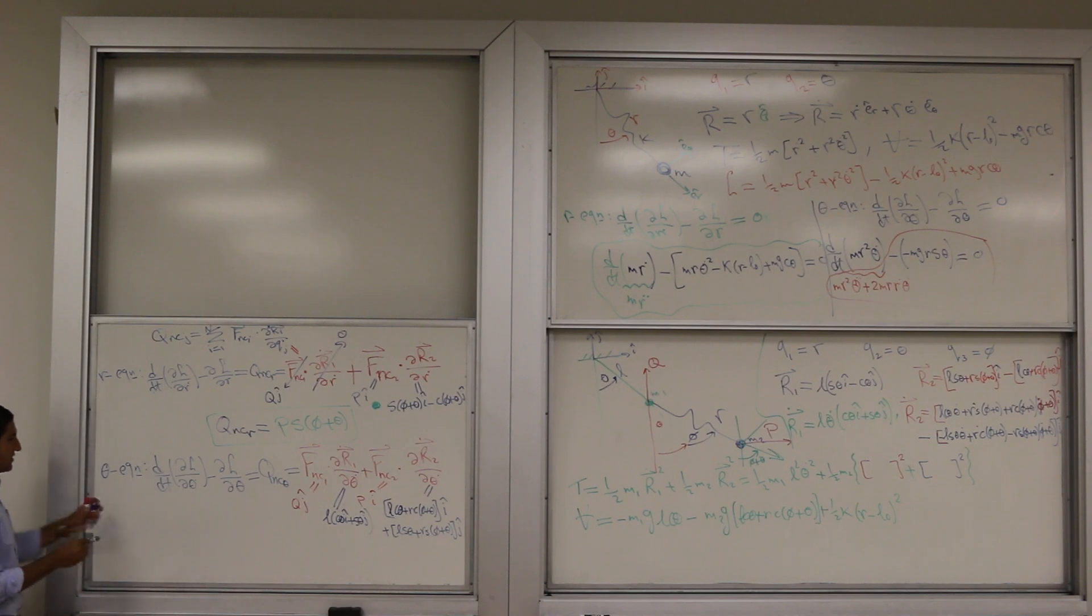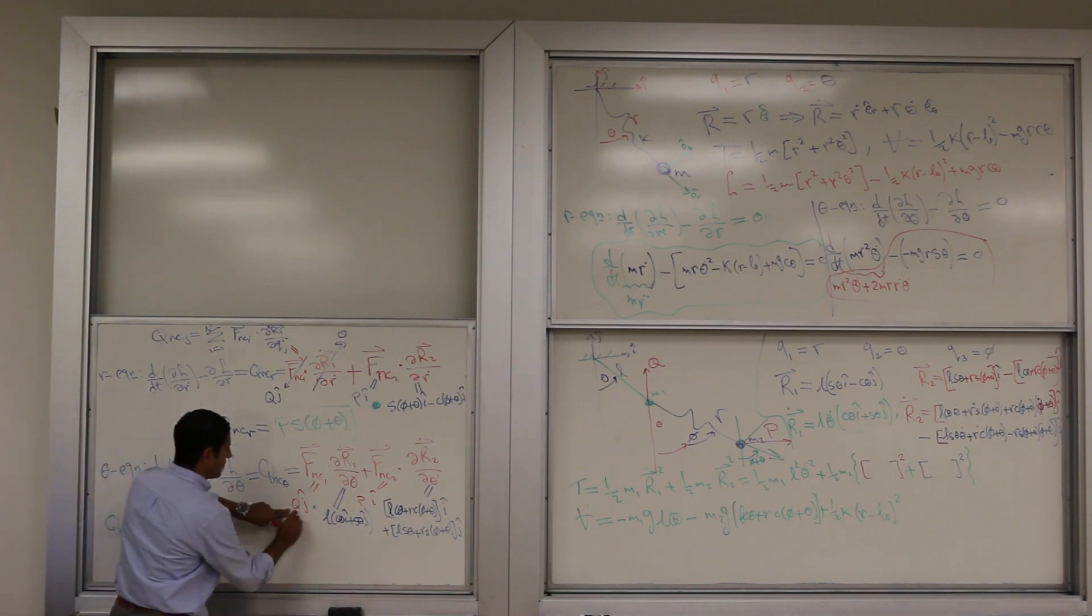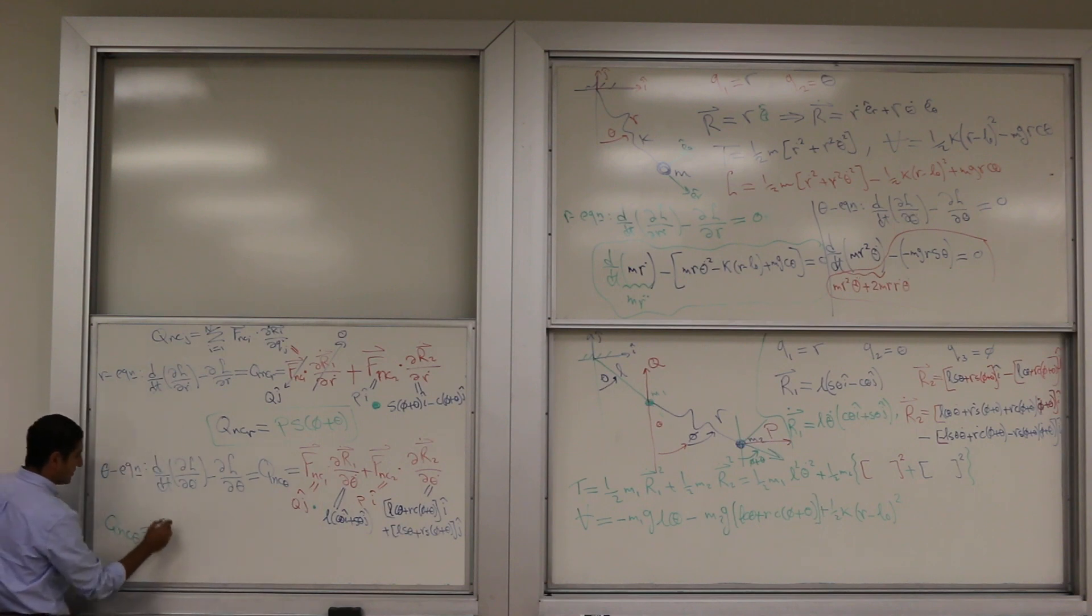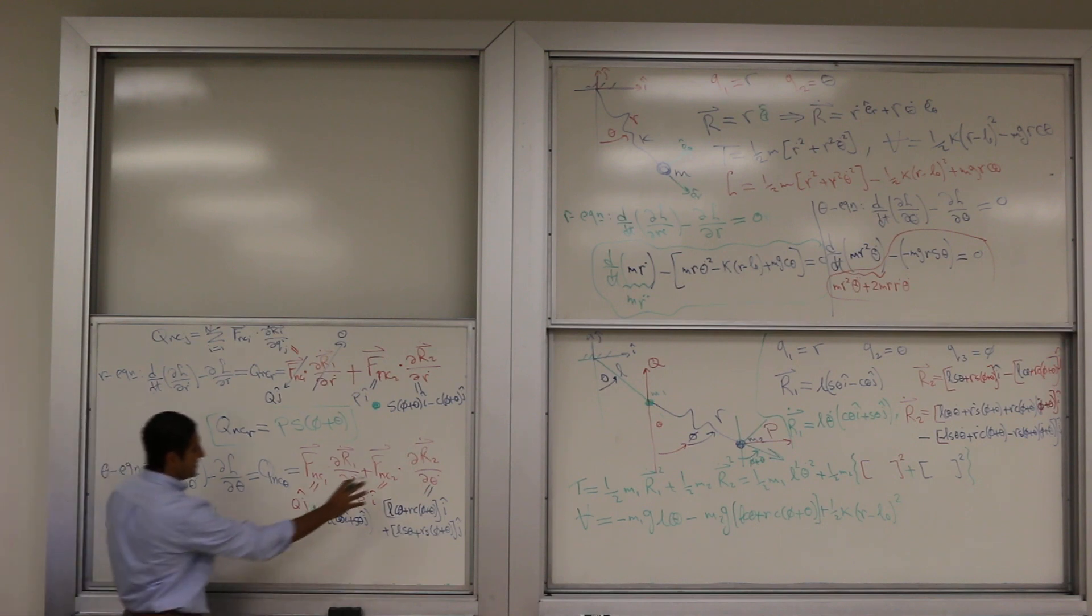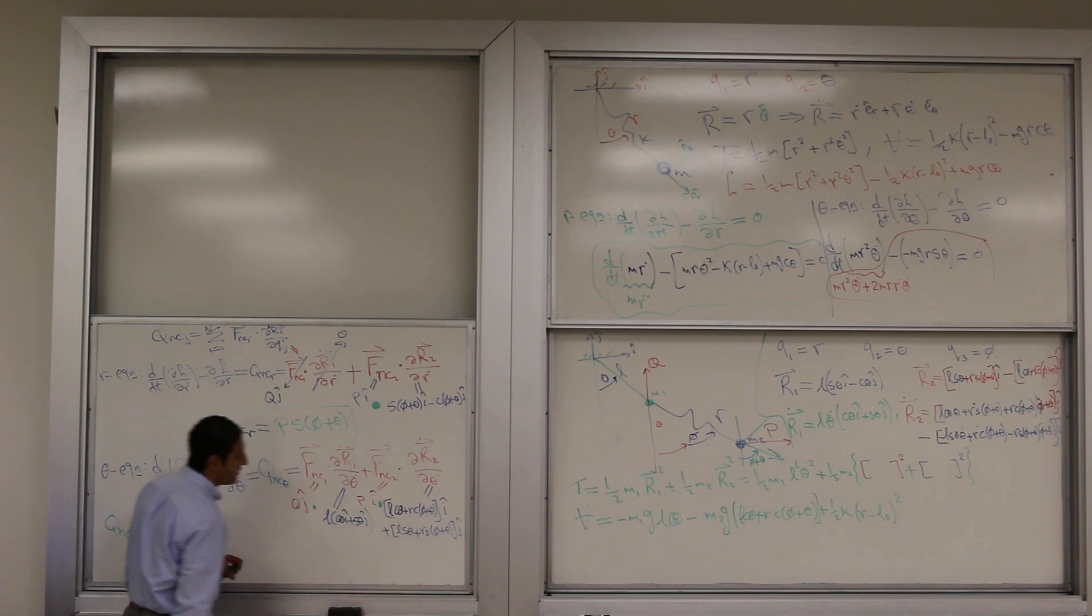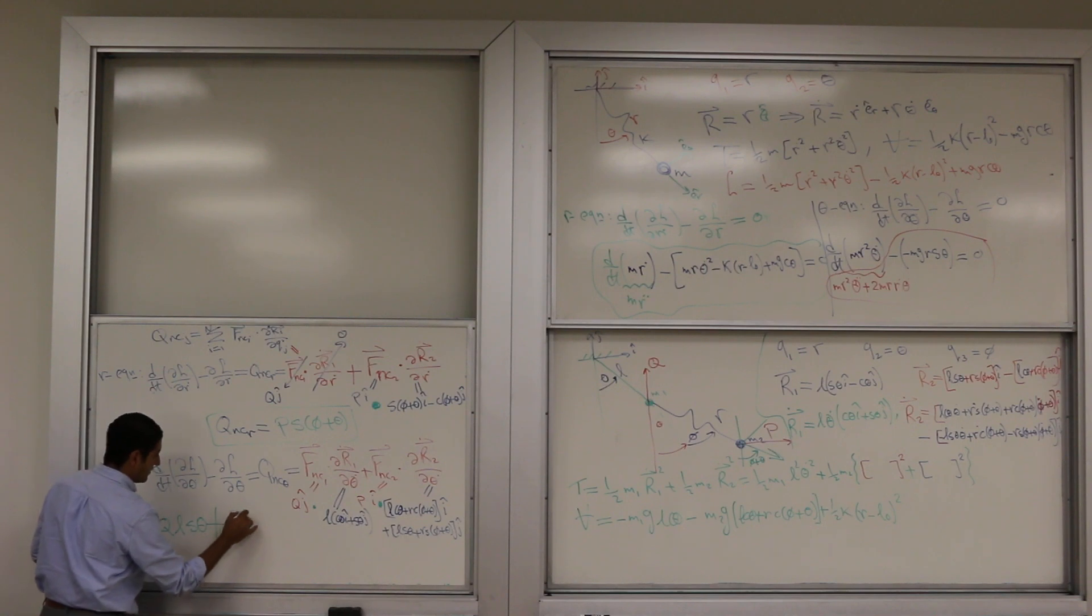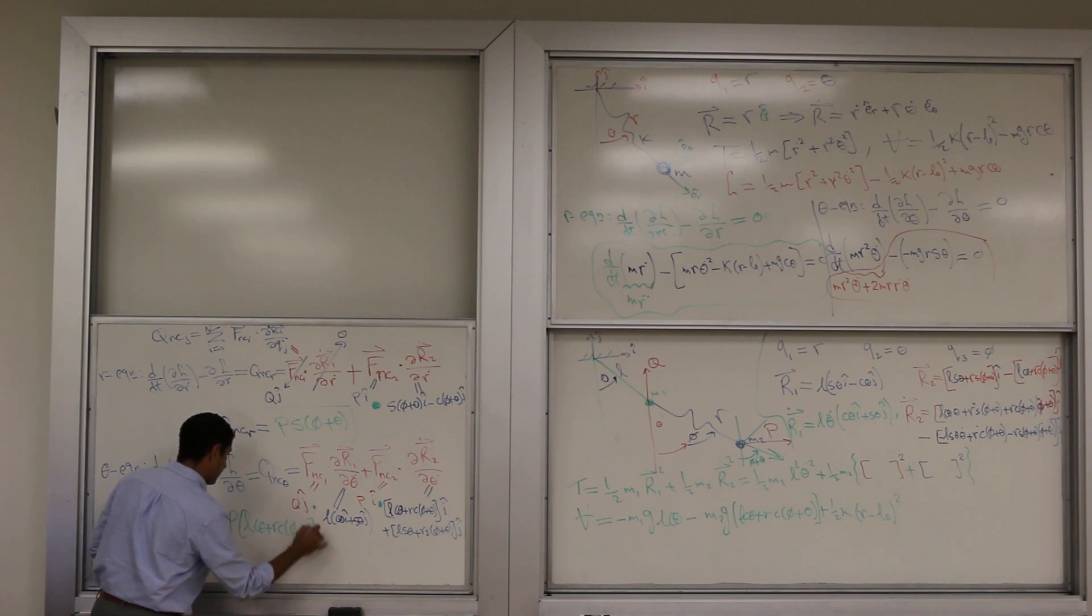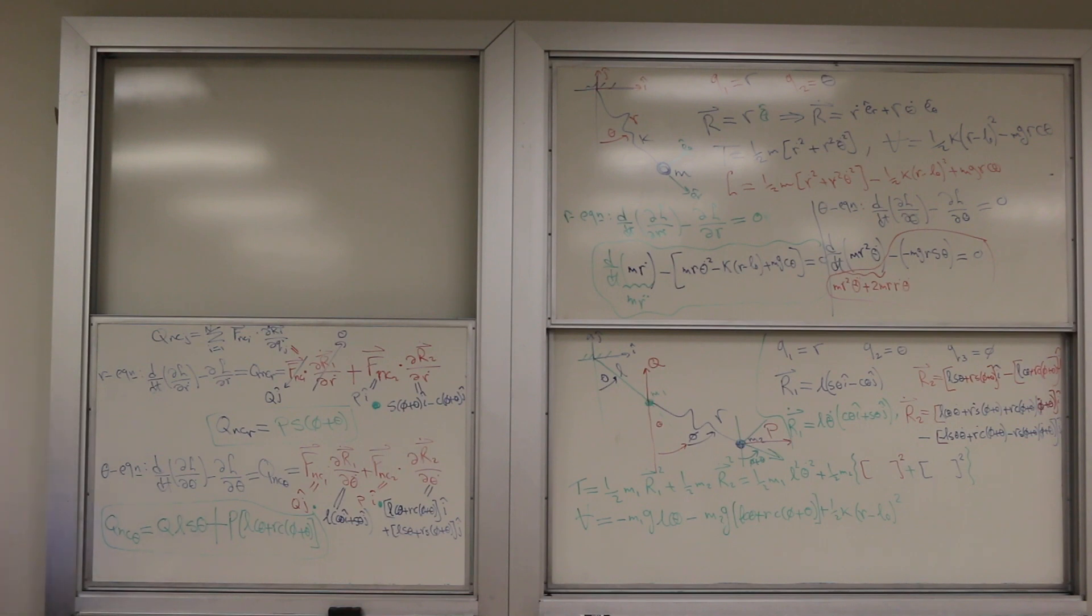Let's do Q_NC_theta. Let's do the dot product. This is J dotted with two components, so I'm going to take the J one. So this is Q L sine theta from here, plus, from the second term, I have P dotted with this guy. This is in the I direction, so I'm going to take only the I direction. So P L cosine plus R cosine. Any question? This is the Q_NC_theta.